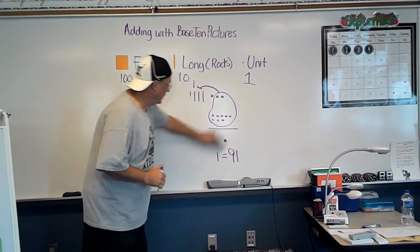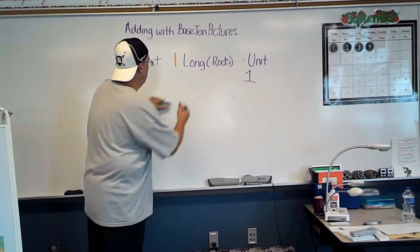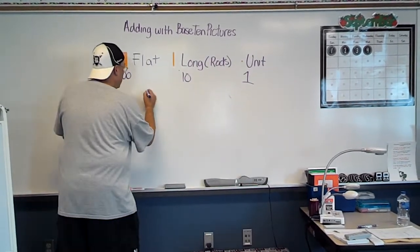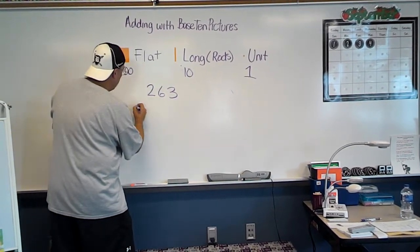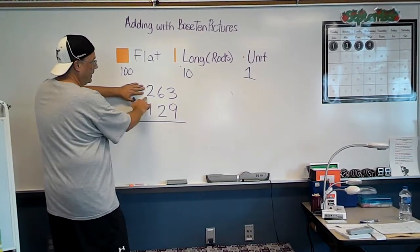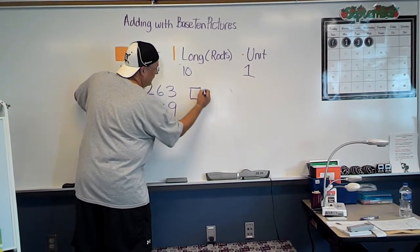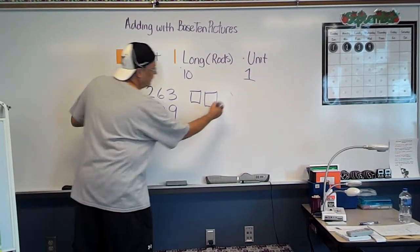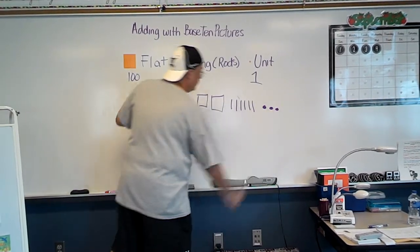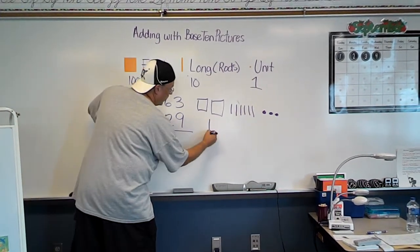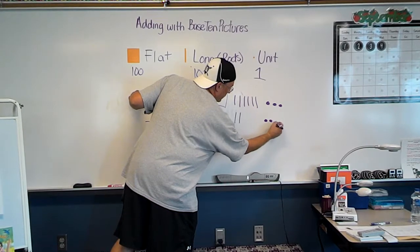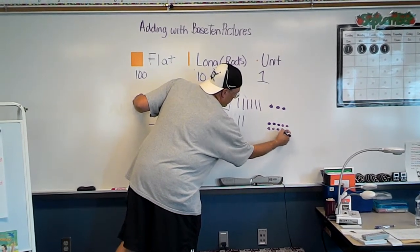This is hard in football practice, guys. All right. Let's go with 263 plus 129. We're going to look at that first number. I know I have 200s, so that's 2 flats. I know I have 6 longs. And I have 3 ones or 3 units. I'm going to draw my second number. I have 1 flat, 100. I have 2 longs. And I have 9 ones.